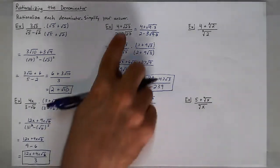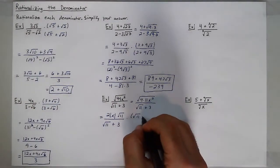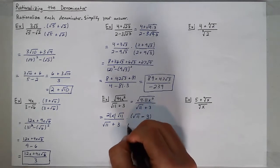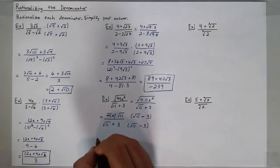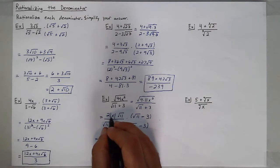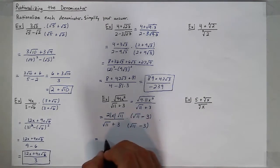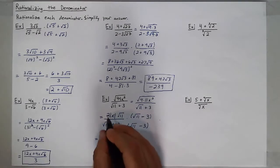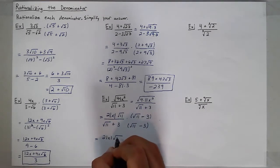So far we've seen mostly minus signs; this one has a plus, so the conjugate is square root of 11 minus 3. Multiplying the absolute value of x times the square root of 11 into that binomial, I get 2 times the absolute value of x times the square root of 121.